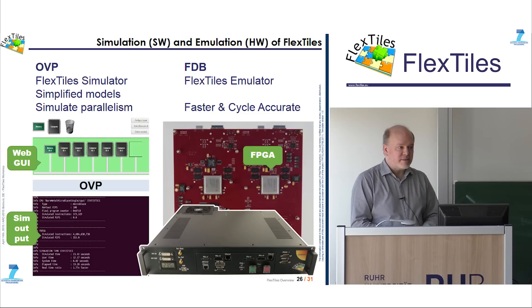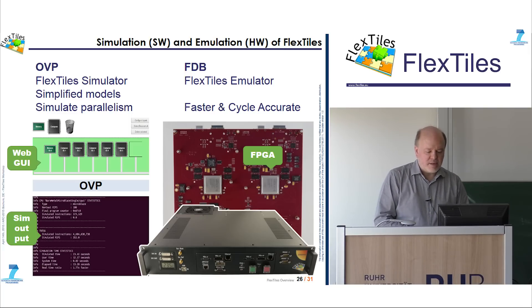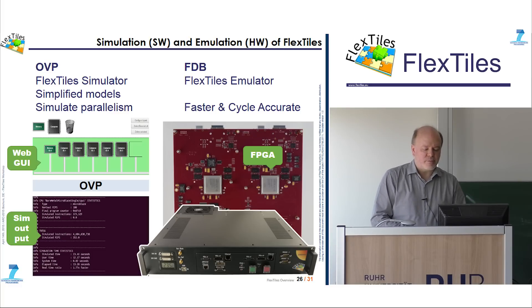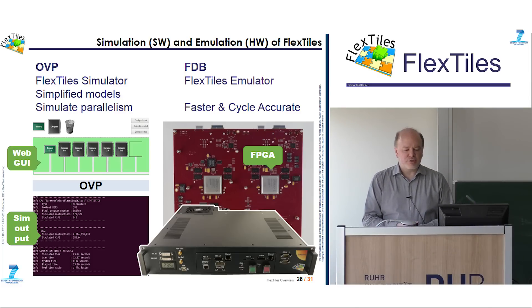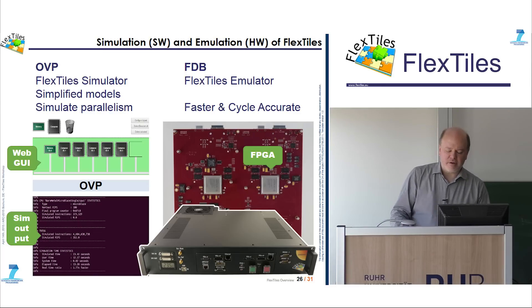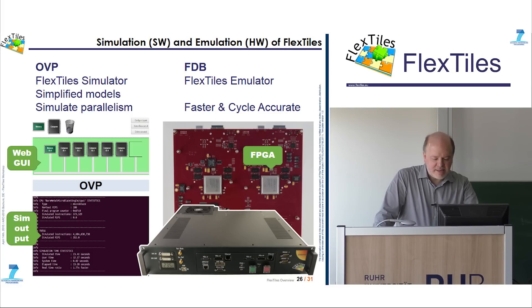To verify the application, we provide two tools: a simulator and an emulator. The simulator is based on OVP and uses simplified models of the processing elements and the FlexTiles platform to simulate application parallelism. We also have a FlexTiles development board based on two FPGAs, which integrates the exact model of all processing elements. It is much faster and cycle-accurate, compared to the OVP simulator which was not.